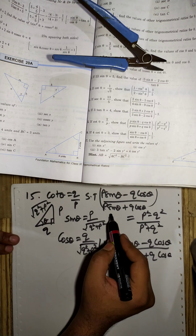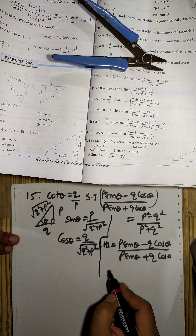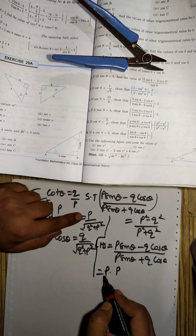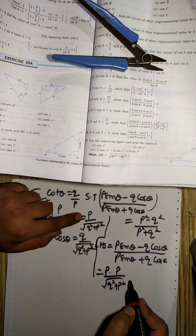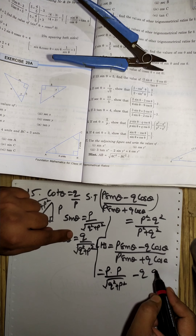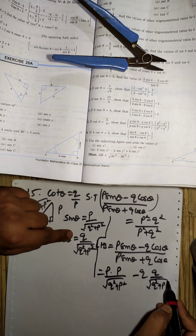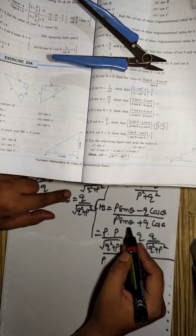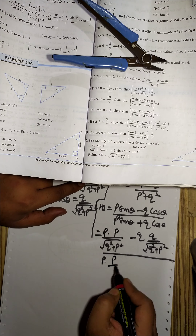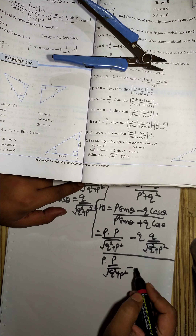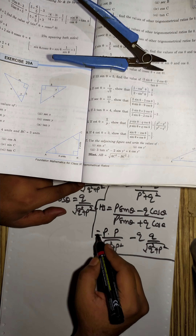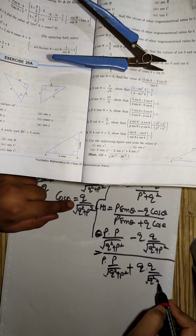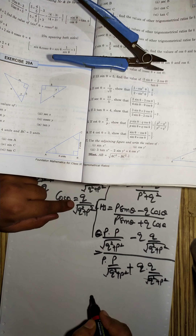Substituting the values of sin theta and cos theta into the left hand side: p multiplied by p upon square root of q square plus p square, minus q multiplied by q upon square root of q square plus p square — all over p multiplied by p upon square root of q square plus p square, plus q multiplied by q upon square root of q square plus p square. Since all denominators are the same, they can be cancelled out.